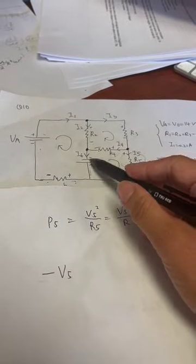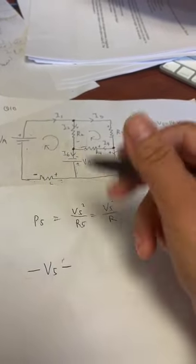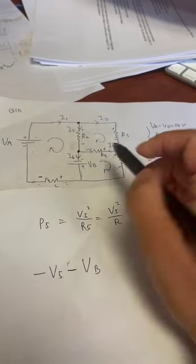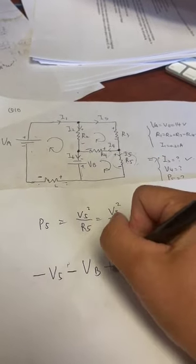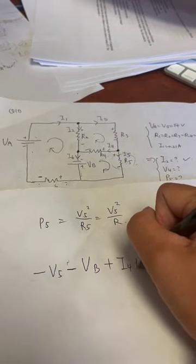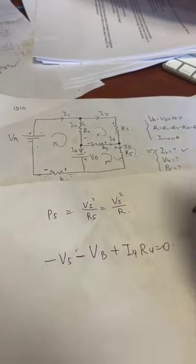And then from positive to negative, another voltage drop, V of the battery. And from here, you have a voltage gain is I4 R4 is equal to zero.